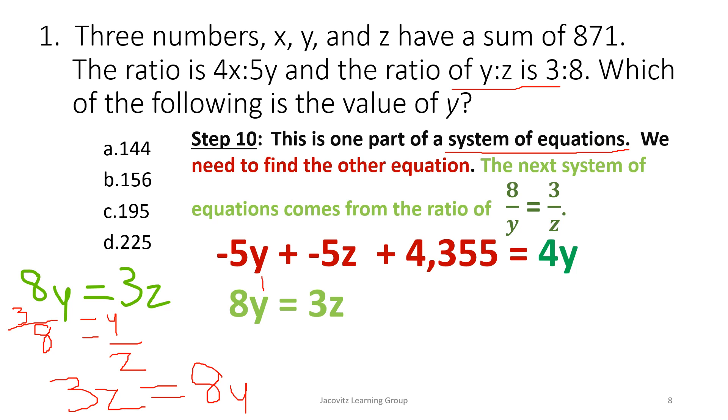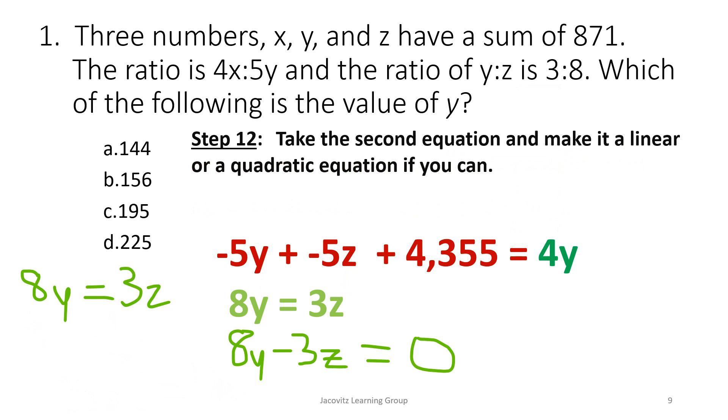Try to keep everything lined up, as I'm sure your algebra teachers have taught you. Okay? Let's try to keep everything lined up. You have it here. Okay. Now, here you are. 8y minus 3z equals 0. Now you have a true system of equations, and you can go ahead and solve.